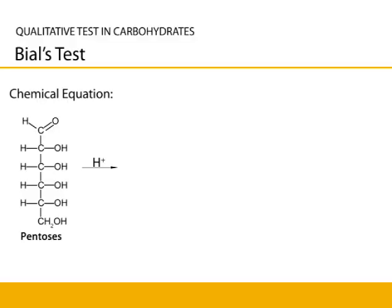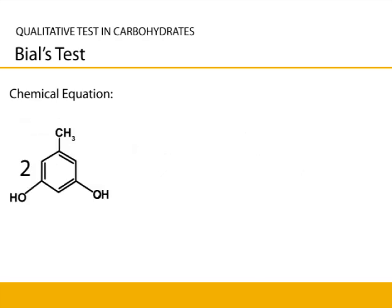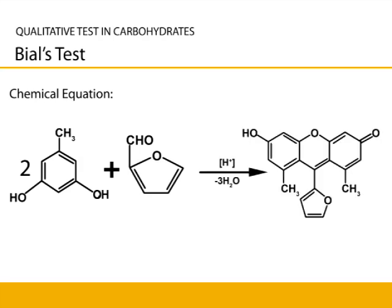Pentoses dehydrate in the presence of acids to yield furfurals, which react with orcinol in Bial's reagent to yield a bluish-green complex. Hexoses also yield 5-hydroxymethyl furfural, which reacts with orcinol to give a yellowish-brown complex.